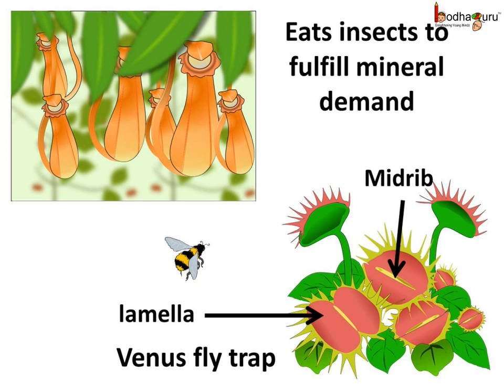The Venus flytrap also traps insects. In the Venus flytrap, the lamina is divided into two parts joined to the midrib, which acts like a hinge. So when an insect sits on the leaf, the two parts come together to trap the insect. Sundew, bladderworts, and similar plants also eat insects.